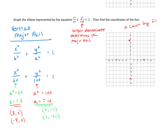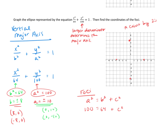The last thing we need to determine is the foci of our graph. That's going to be the c value. Remember we said that a squared equals b squared plus c squared. So a squared is 100, b squared is 64, plus c squared. Subtracting 64, we get c squared equals 36. Square rooting both sides, c equals positive and negative 6. Because the major axis is vertical, those go on the y-axis, so the foci are (0, 6) and (0, -6).